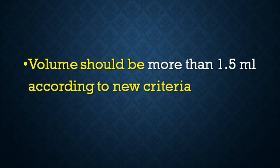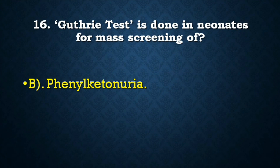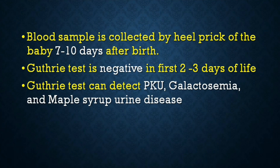Next question: The Guthrie test is done in neonates for mass screening of — neonatal hypothyroidism, phenylketonuria, hemoglobinopathies, or congenital dislocation of hip? Correct answer is phenylketonuria. Blood sample is collected 7 to 10 days after birth, as the Guthrie test is negative in the first 2 to 3 days of life. It can also detect galactosemia and maple syrup urine disease.